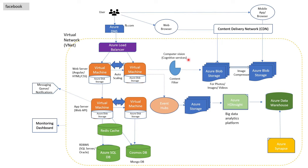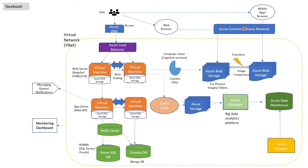Converting laptop-specific images into mobile-sized images can be done by Functions in Azure. Functions are serverless computing — they do not need any outside involvement. You can use complex algorithms to compress and resize the images with the help of these functions. Following the same naming convention, the content delivery network will be replaced by Azure Content Delivery Network, which will help in setting up different locations in the world so that images and videos can be accessed without latency.